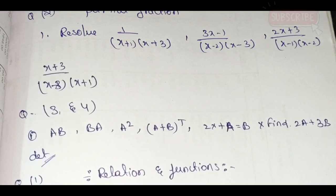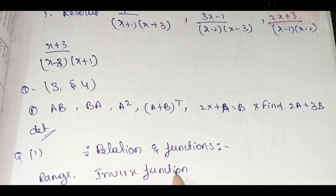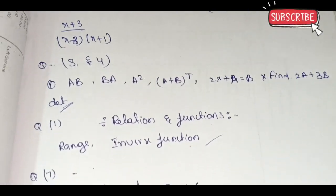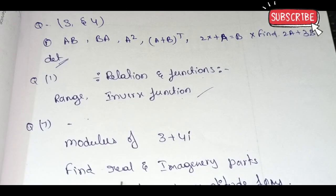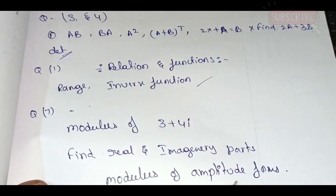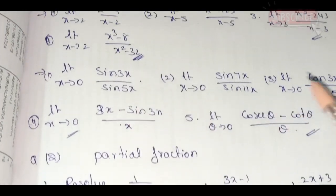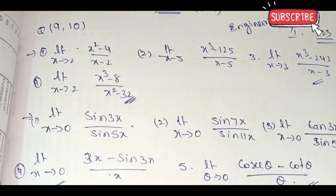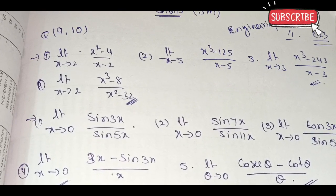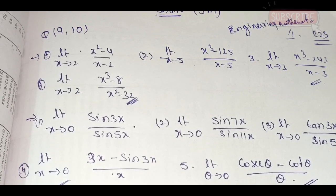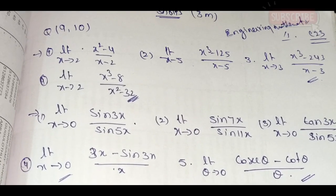Question number 3 and 4 are small short answer questions. For relations and functions — find the range and inverse function. Question number 7: find the modulus of 3 plus 4i, find real and imaginary parts, and the modulus-amplitude form. For trigonometry, choose compound angles and multiple and sub-multiple angles. Complex numbers are also included.